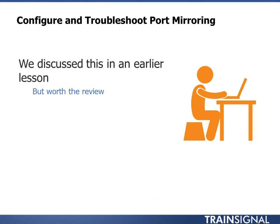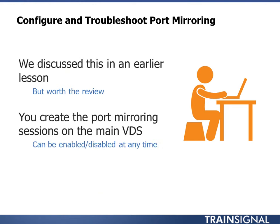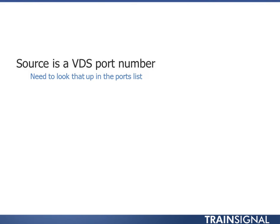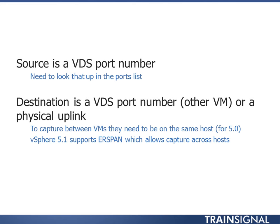Port mirroring — we looked at this in another lesson. You create port mirroring sessions on the main distributed switch, and you can enable and disable them at any time. The source is a distributed switch port number, so you'll need to look that up in your ports list. The destination is a VDS port number if you're doing another VM, or a physical uplink if you're passing traffic up. To capture traffic between VMs, they need to be on the same host. A lot of people think you can mirror traffic from a VM on one host to a VM on another — that's not true.